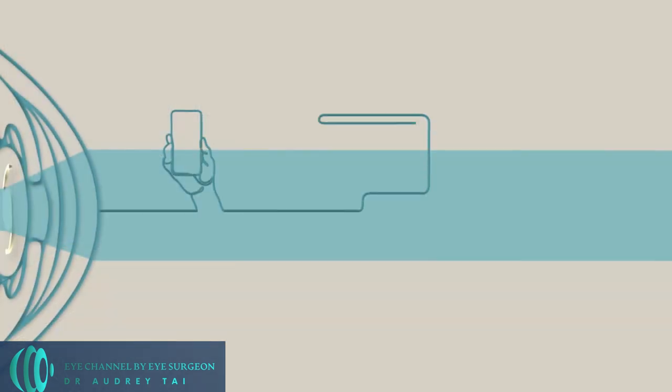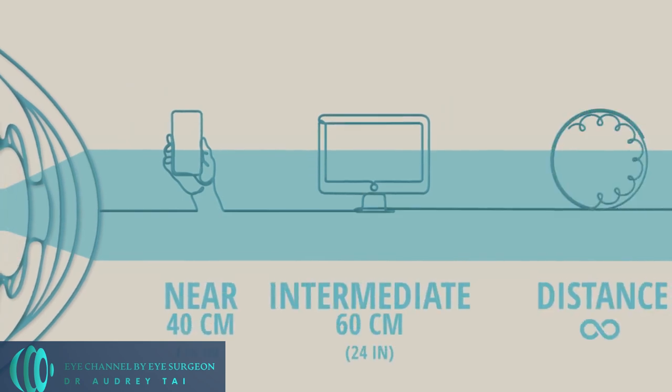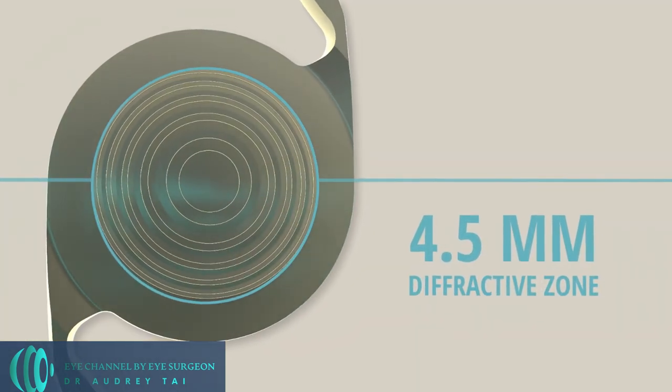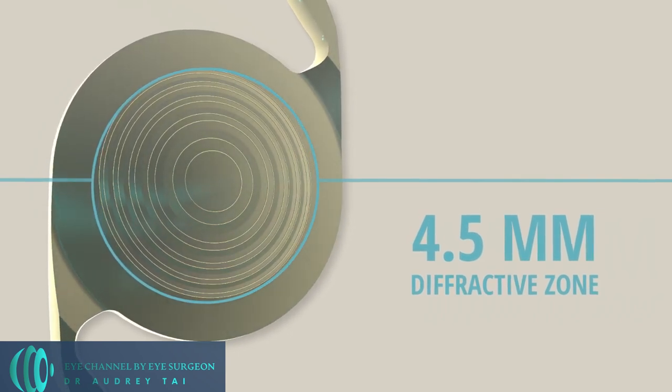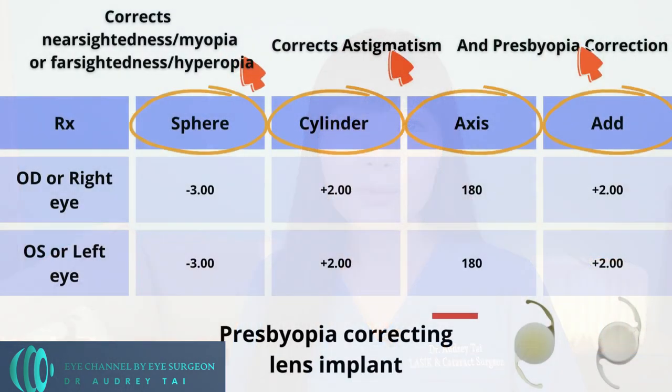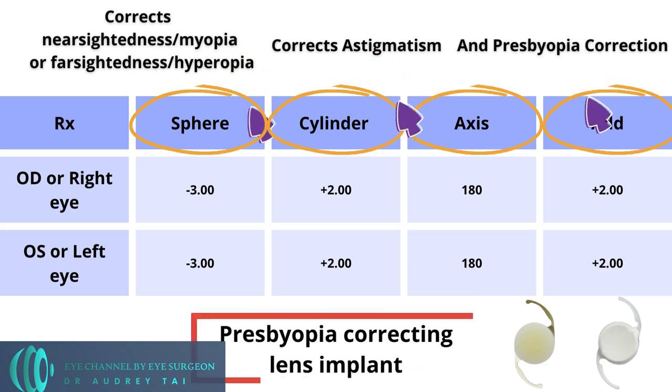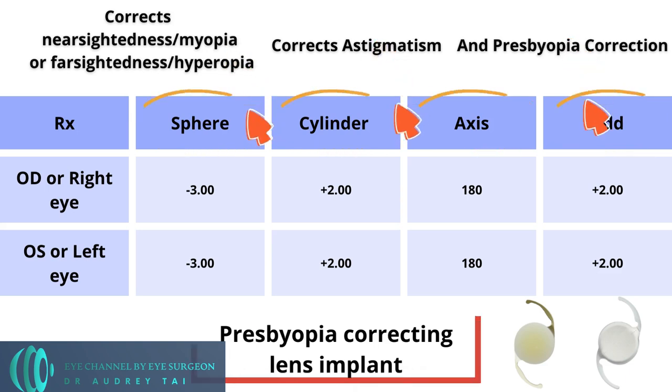The third option is called a presbyopia correcting lens implant, or multifocal and extended depth of focus lens implant. This lens option is the most advanced lens implant. Instead of only targeting a single vision zone such as either distance or near vision correction, a presbyopia correcting lens implant can provide a much wider range of clear vision, hence the term multifocal. Typically, the implant has a set of concentric rings, so the different zones of the implant have different strengths of correction in order to correct distance, intermediate, and near vision. This type of implant corrects all four sets of numbers on a glasses prescription: nearsightedness or farsightedness, astigmatism, and presbyopia or reading vision.